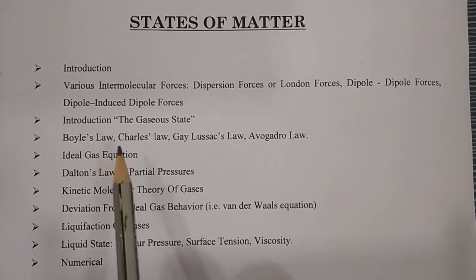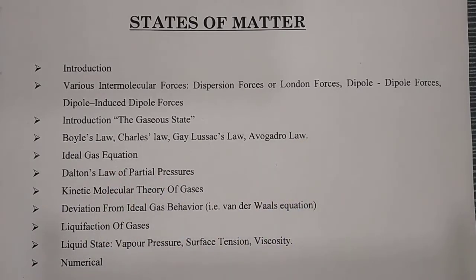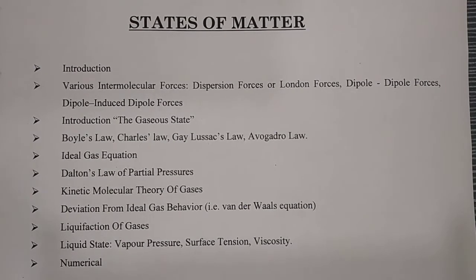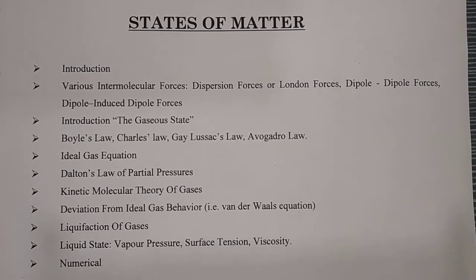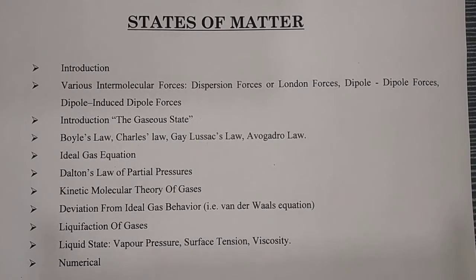Then we move to the most important part — the heart of this chapter: Boyle's Law, Charles's Law, Gay-Lussac's Law, and Avogadro's Law. These are the four pillars of this chapter. On the basis of these we derive the ideal gas equation, PV = nRT. Next important topics are Dalton's law of partial pressure, kinetic molecular theory of gases, deviation from ideal gas behavior, and liquefaction of gases — how gases like LPG are converted into liquid. Then liquid state properties: vapor pressure, surface tension, and viscosity, followed by chapter numericals.